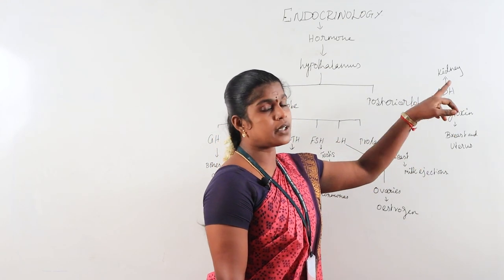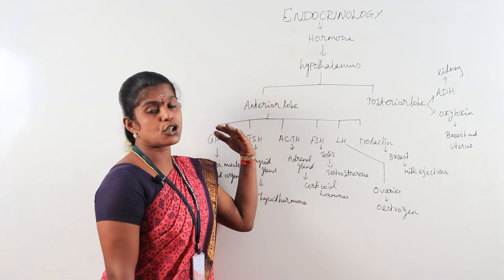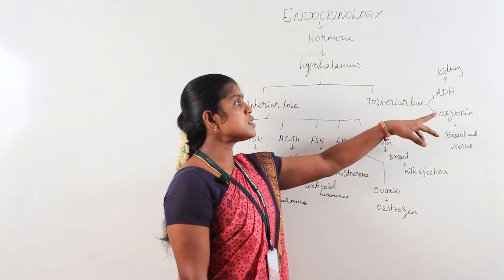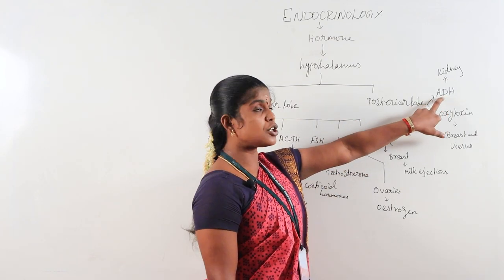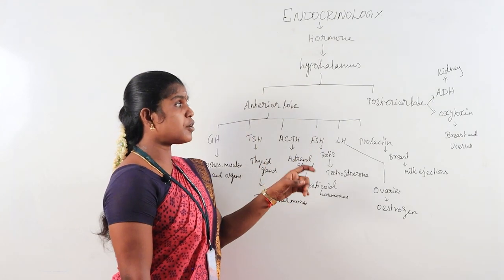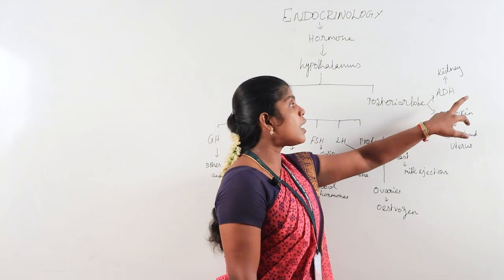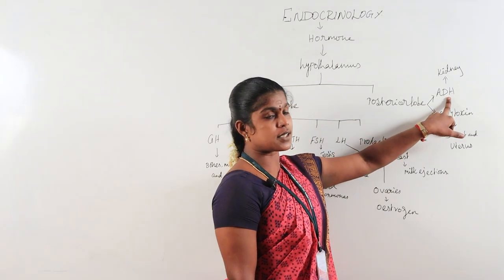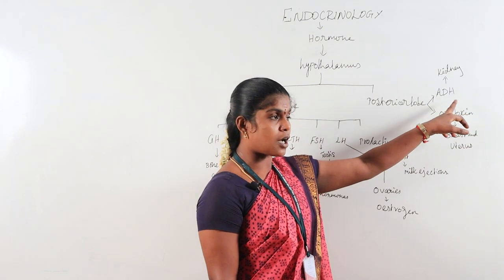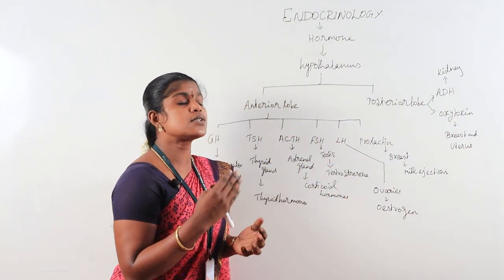ADH — antidiuretic hormone or vasopressin — acts on the kidney. It is involved in the tubular secretion process and is specialized for normal urination. It regulates urine absorption in the tubular secretion process.